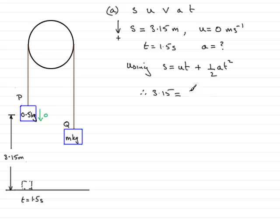Then we've got this term, which is going to be a half of a multiplied by t squared. t is 1.5 seconds, so that's 1.5 squared.